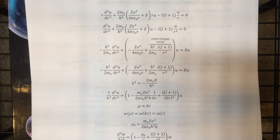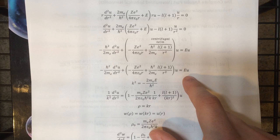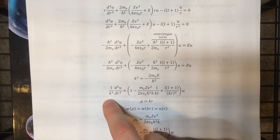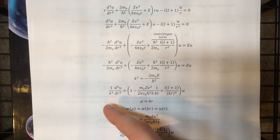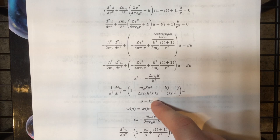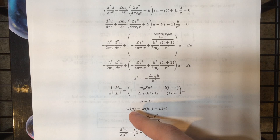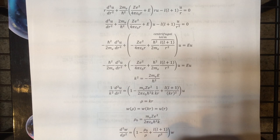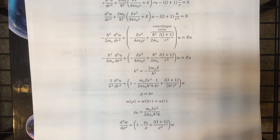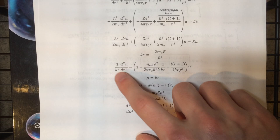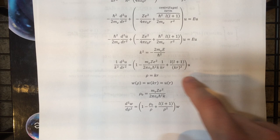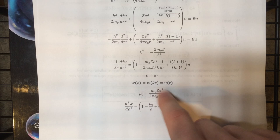Now we need to do a change of variables. We divide by E and pick k squared to equal that, giving us a one-over-k-squared factor in relevant terms. Then we change the variable from r to rho — it's just a constant rescaling. Since it's a rescaling by k, dr squared turns into d-rho squared, r squared turns into rho squared, kr turns into rho, and we absorb all the remaining constants into rho-naught.